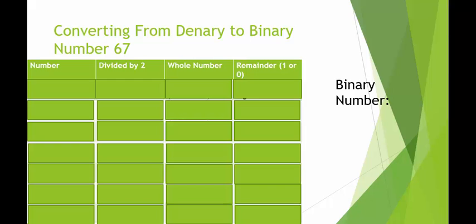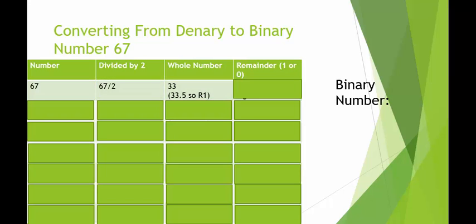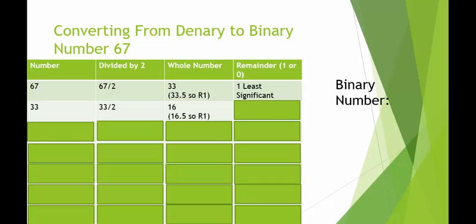Let's take a look at another example: 67. This time an odd number — doesn't matter if it's odd or even, double digits or triple digits, it makes no difference. The system works the exact same way. So we take 67, we divide by two, we get 33.5. My whole number is 33, but I have a decimal, so that gives me a remainder of one — that's my least significant digit. I take my number 33, I divide by two. I'm going to get a decimal, so I'll have a remainder of one. My whole number is 16.